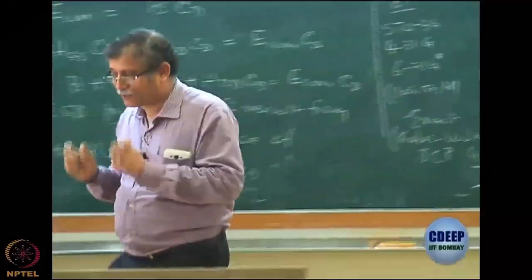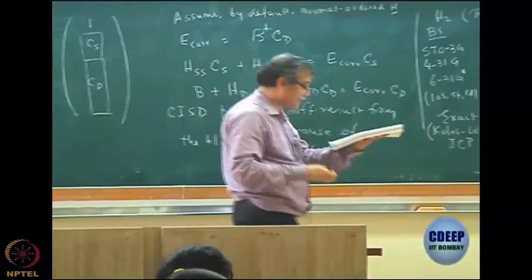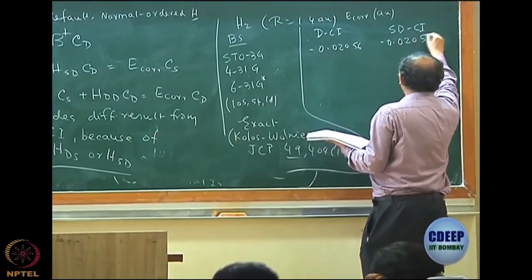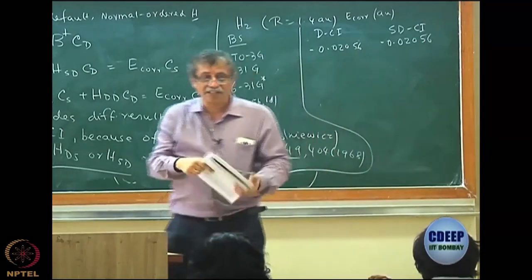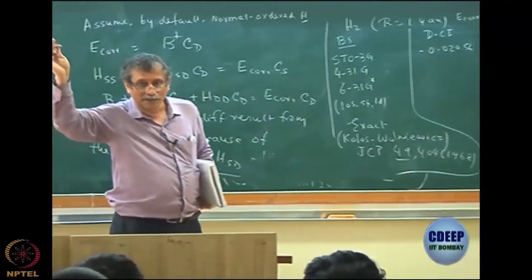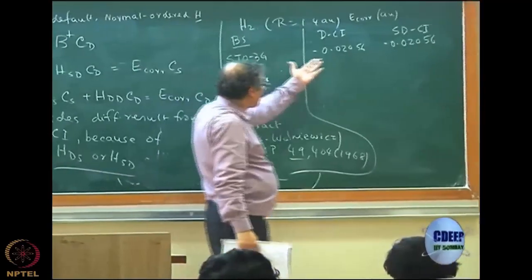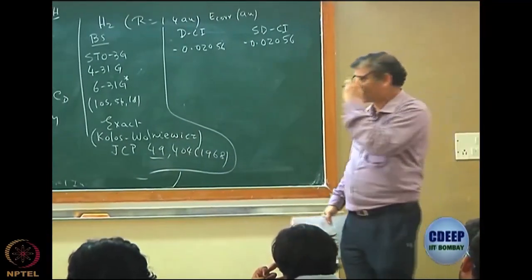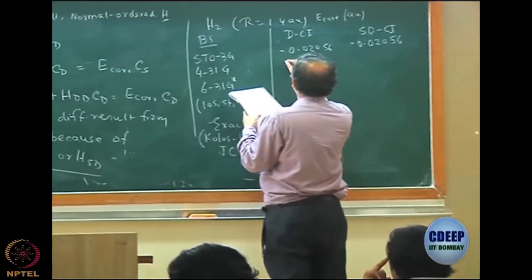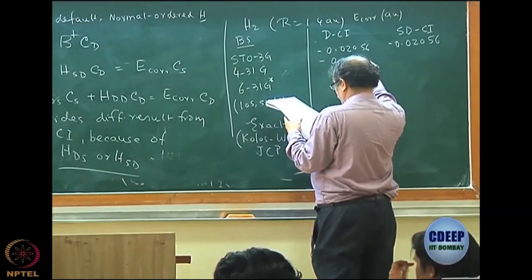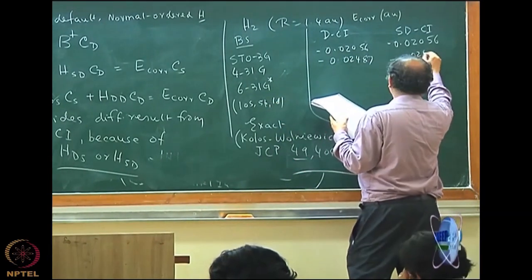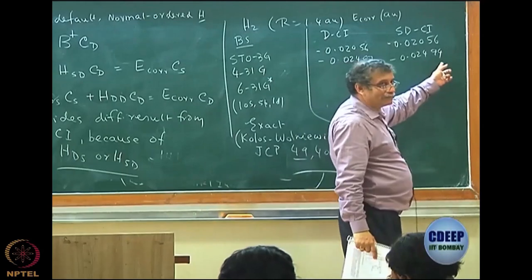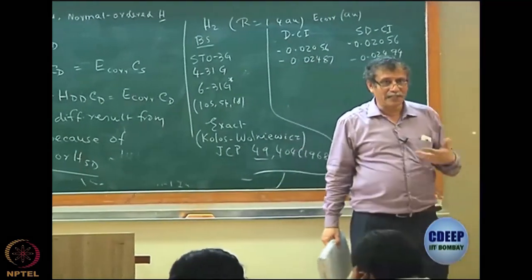Going back to the numbers: DCI gives −0.02056. In STO-3G there is no difference between DCI and SDCI up to this decimal — perhaps a difference appears only at the 7th or 8th digit. This shows that DCI and SDCI really do not distinguish the energy in the STO-3G basis. At 4-31G, DCI gives −0.02487 and SDCI gives −0.02494; the contribution of singles is still very small — only at the fifth decimal digit.